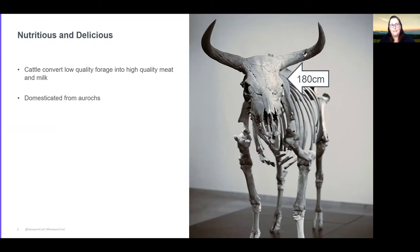Cattle are both a nutritious and delicious food source for humans. They are able to do something really important which is to convert low quality forage into high quality meat and milk for human consumption, and they were originally domesticated from aurochs.